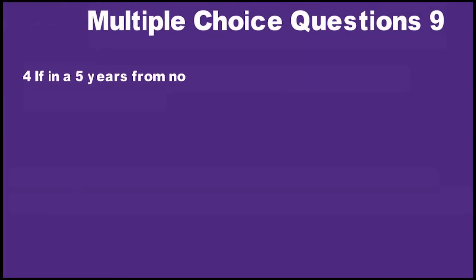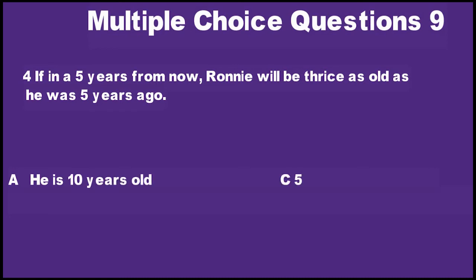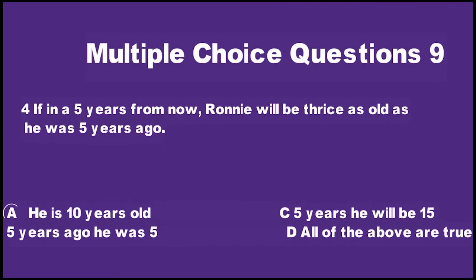Question number 4: If in 5 years from now, Ronnie will be thrice as old as he was 5 years ago. A: He is 10 years old. B: 5 years ago he was 5. C: 5 years he will be 15. D: All of the above are true. All of the above are true, so this is the right choice.